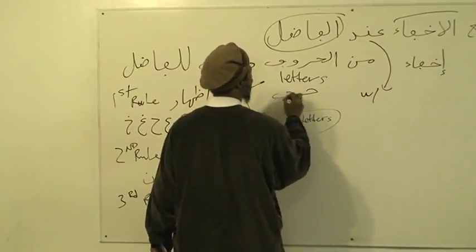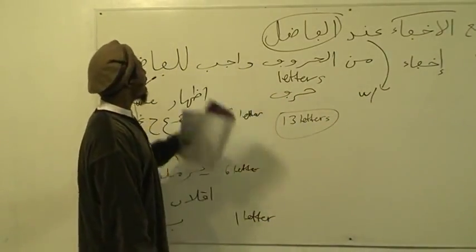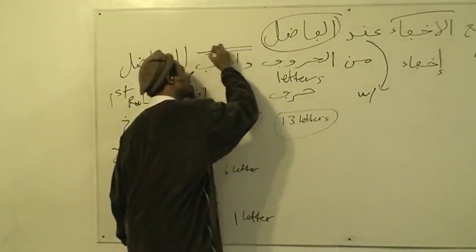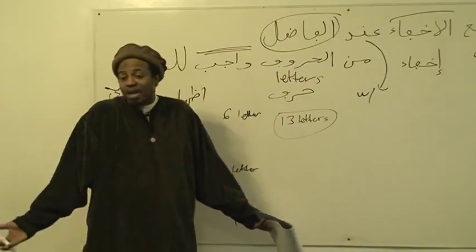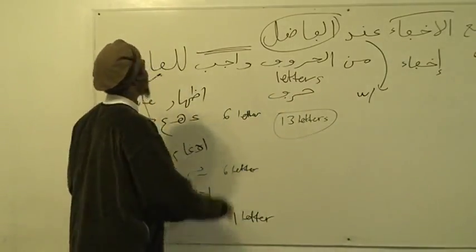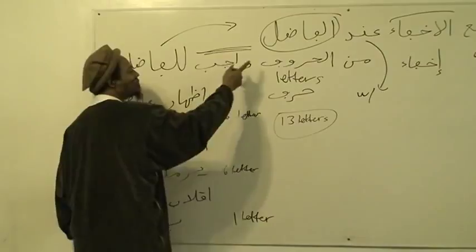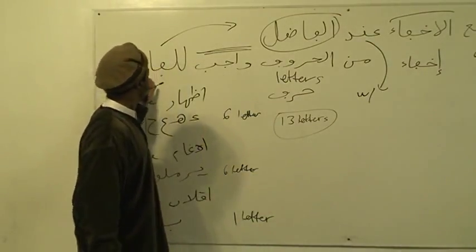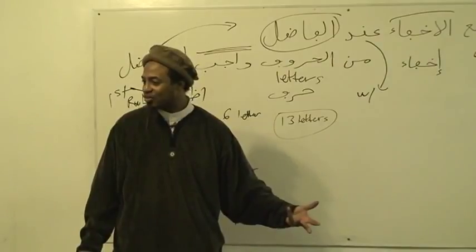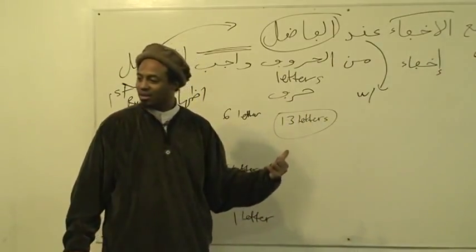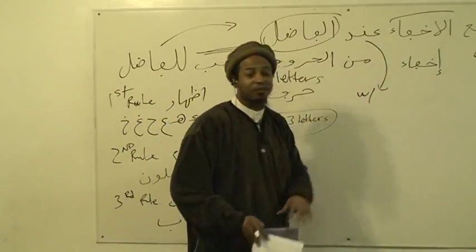Harf is a letter, huroof are the letters. It says wajibun — what does wajib mean? Obligatory. That is obligatory lil-fadli, to make them the remainder. In the remainder of the letters, it's wajib that you tufaddal bihim — that you put them forward, tufaddalum bil-ikhfa. That you prefer them with Ikhfaa. This rule is Ikhfaa.